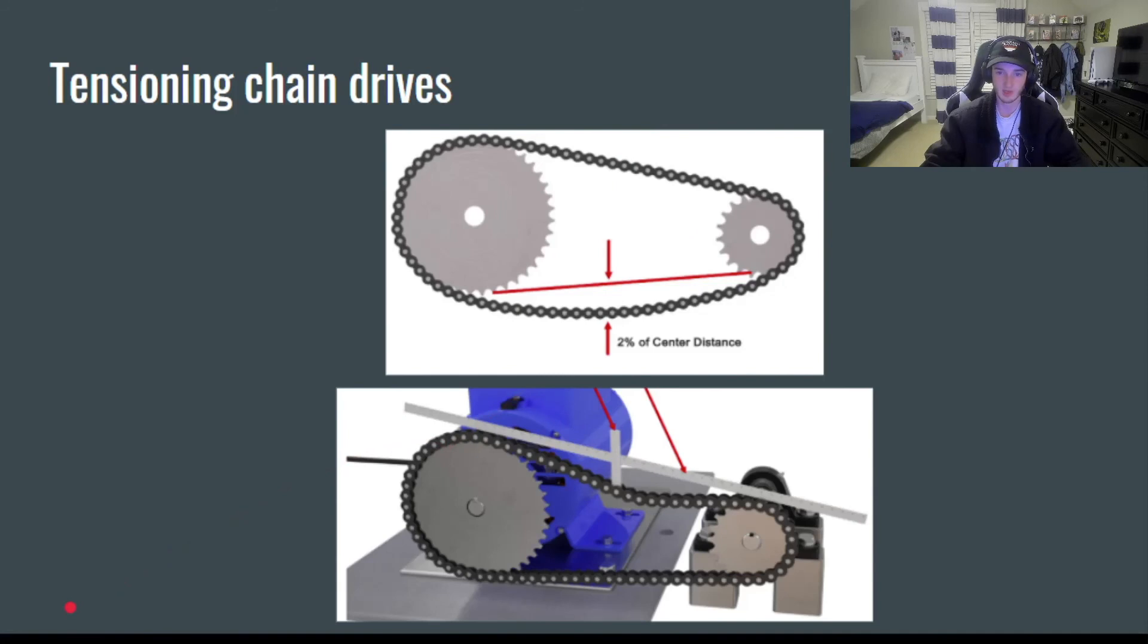And finally, for tensioning chain drives, it's a little bit different, actually easier than belt drives. Measuring chain sag, as it's called, you just need two straight edges, and you're going to use the 2% rule to adjust your chain sag.